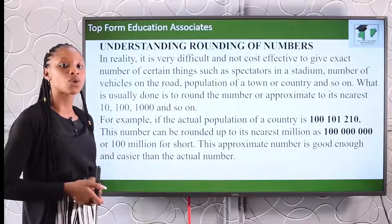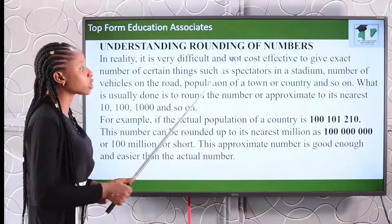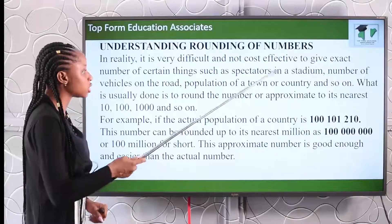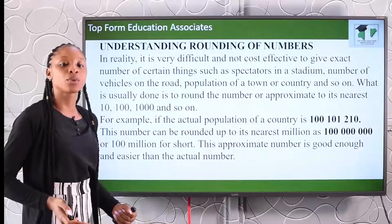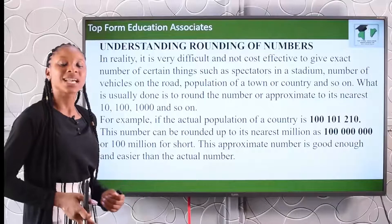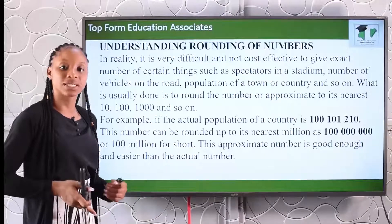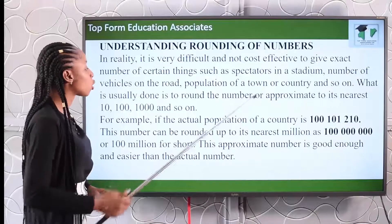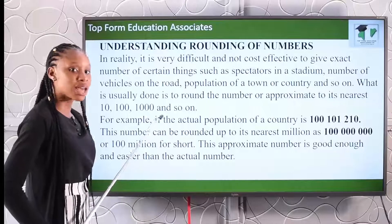Let us look at understanding rounding of numbers. In reality, it is very difficult and not cost-effective to give the exact number of certain things, such as spectators in a stadium, number of vehicles on the road, population of a town or a country, and so on. During a population census, we make use of estimation and approximation, because it is not possible to get the exact total number of people in a given city. So we must estimate and approximate. What is usually done is to round up the number to its nearest ten, hundred, thousand, and so on.